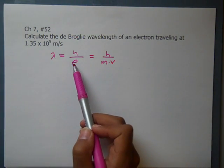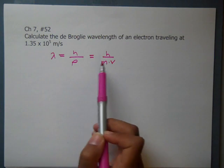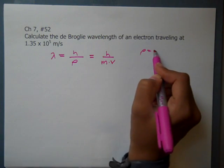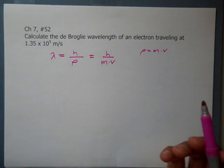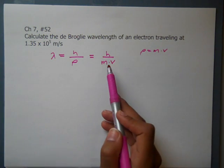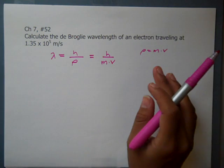Remember this p, the rho is momentum, and mass times velocity is how you get p. Make sure you can interconvert between those two denominator values. We can use either or, and so we're going to have to use mass times velocity because we're not given the momentum.